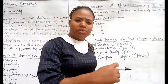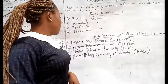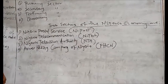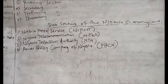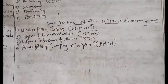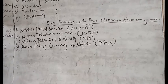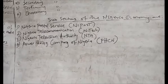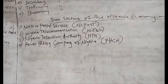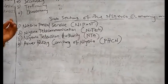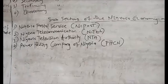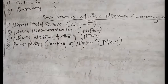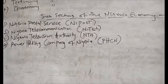Under it, we have the sub-sectors of Nigerian economy. These sub-sectors include the Nigerian Postal Service (NIPOST), the Nigerian Telecommunication (NITEL), the Nigerian Television Authority (NTA), and the Power Holding Company of Nigeria (PHCN). All these have their own functions.